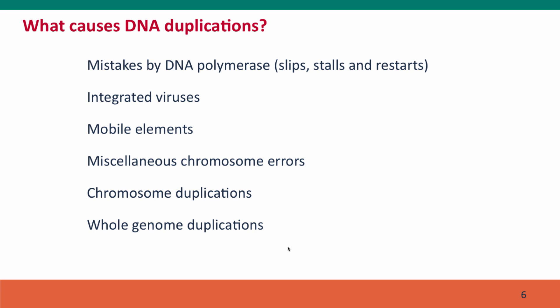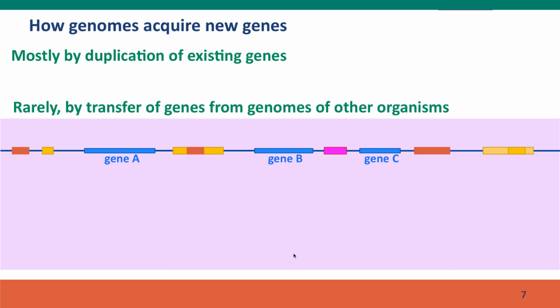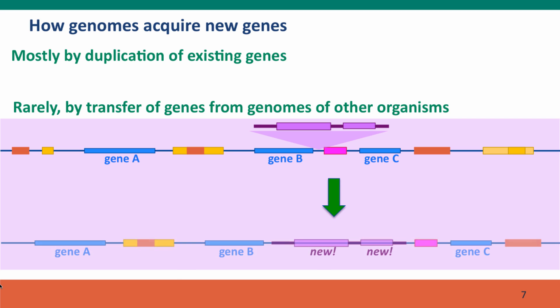These chromosome errors we'll discuss in Module 10. Now, rarely, rather than duplicating an existing gene, an organism will acquire a new gene from the genome of another organism. Often this is a DNA fragment brought into the cell, say, by a virus. Such DNA fragments are most commonly degraded, but sometimes the cell's DNA repair machinery thinks they're just part of the chromosome that fell out, and it will insert the DNA into the chromosome.